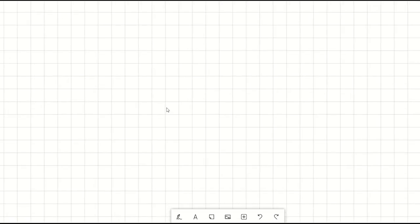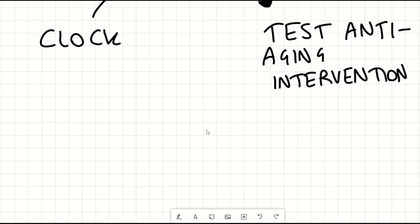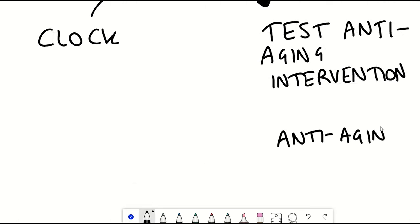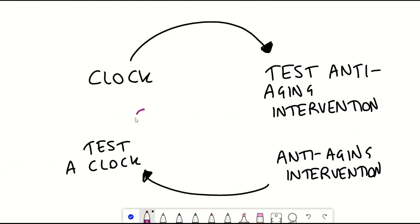because you want an aging clock that changes with interventions to evaluate how these interventions are working. But at the same time if you want to validate the clock itself you need to have validated anti-aging interventions that you know are going to work to validate the biomarkers.